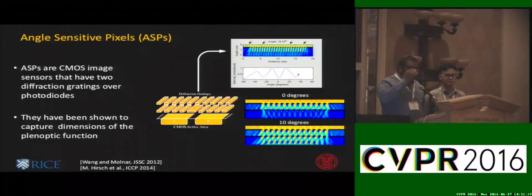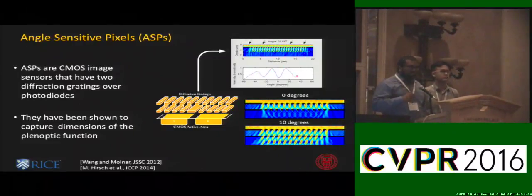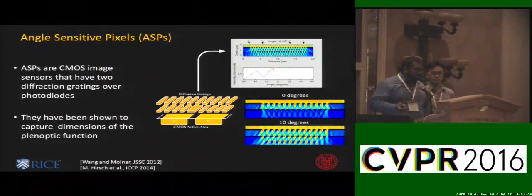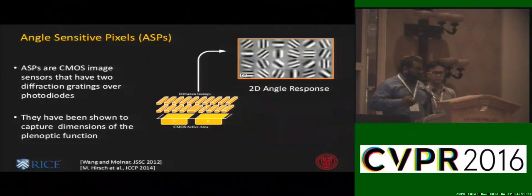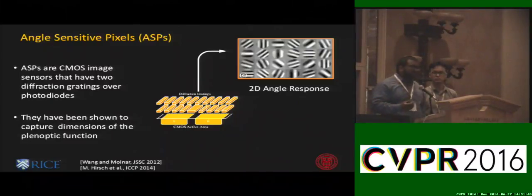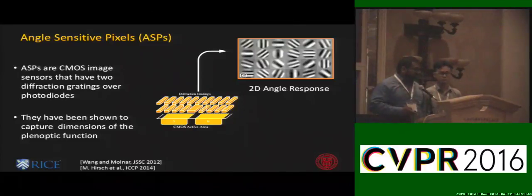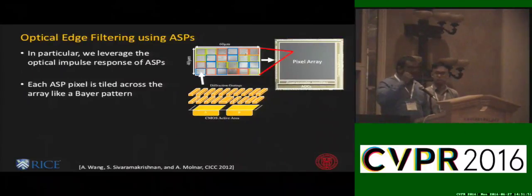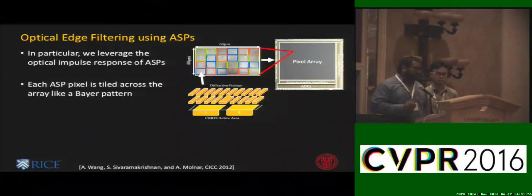The second grating allows certain angles of light to come through with more power to the photodiode than others — this is a sinusoidal modulation. Extending this to 2D, you still have sinusoidal modulation to incidence angle but now as a function of the orientation angle of the grating. These cameras have been shown to capture dimensions of the plenoptic function such as angle and polarization and to do light field imaging. In this work, we focus on the optical edge filtering properties of ASPs to perform the optical edge filtering for the first layer of a CNN.